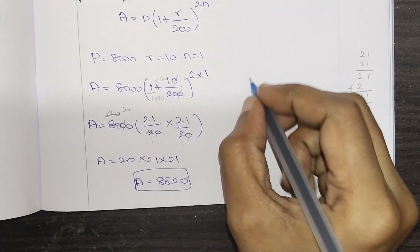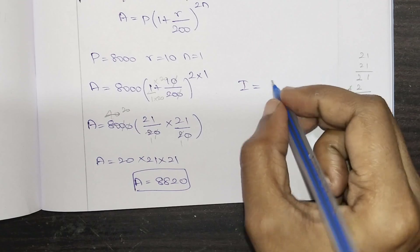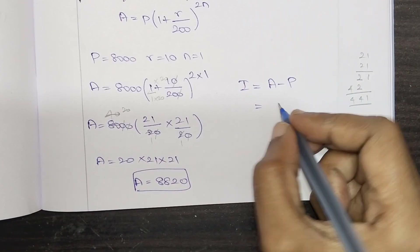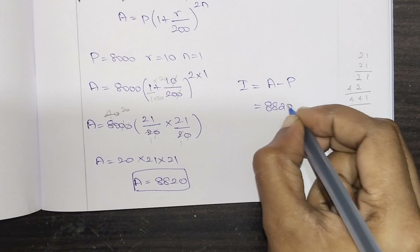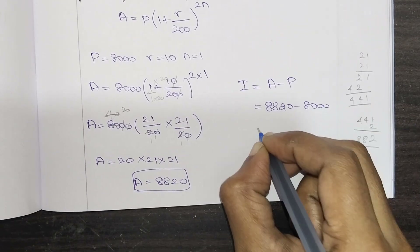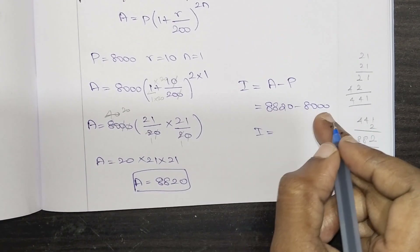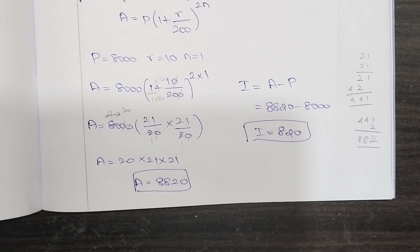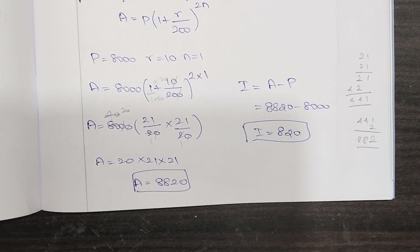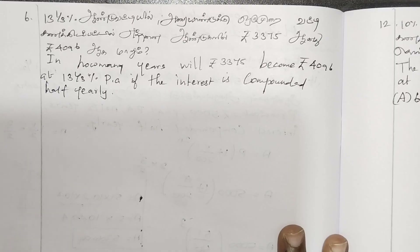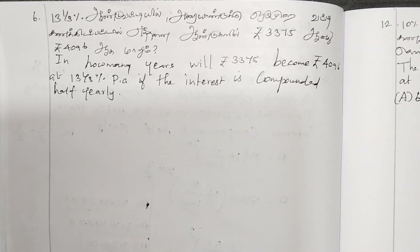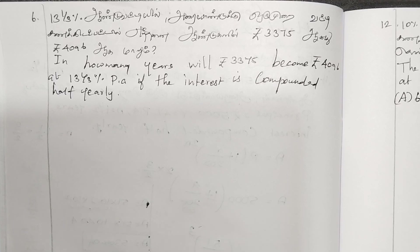The result is 8820. The answer is 8820. In our book there are 5 sums in this chapter. I will tell you 3 sums, and the other 2 sums you can do on your own.